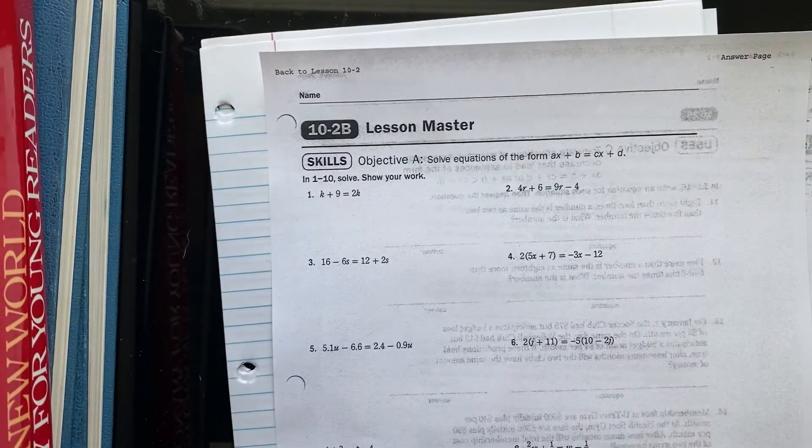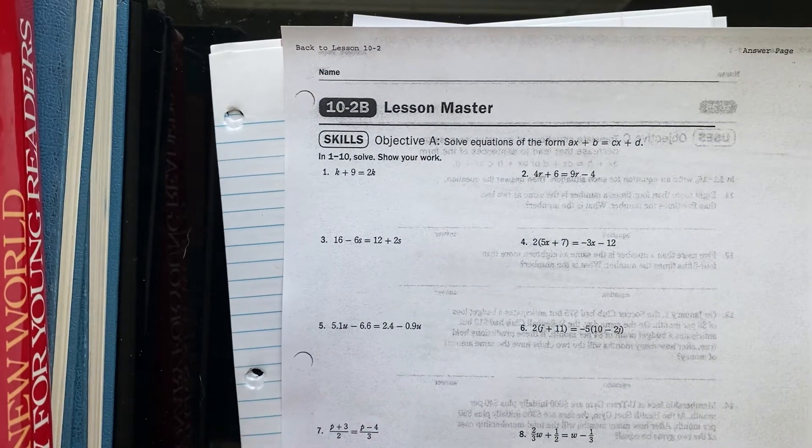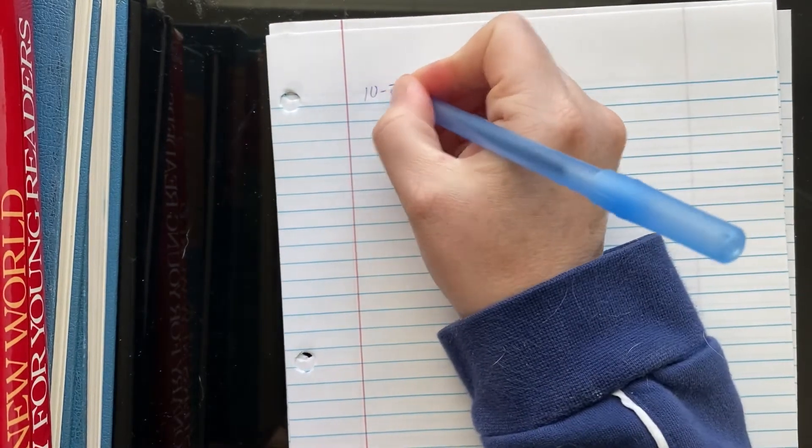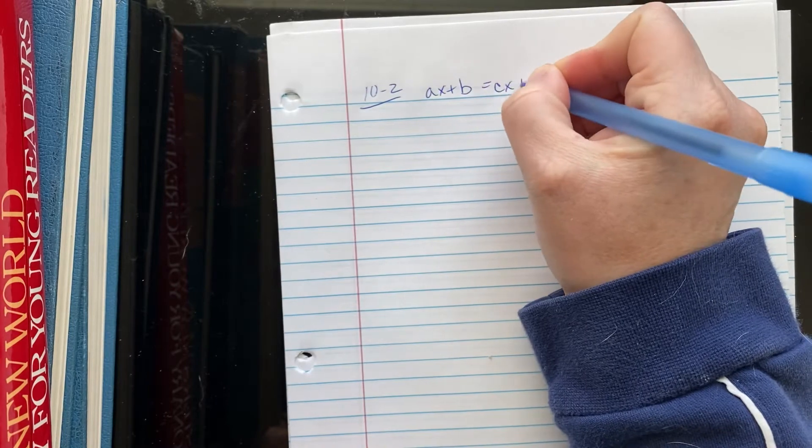Okay, this is a continuing lesson that culminates with the 10-2 lesson master. We're still in chapter 10, lesson 2, AX plus B equals CX plus D.